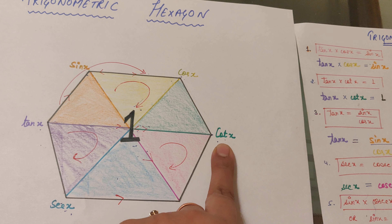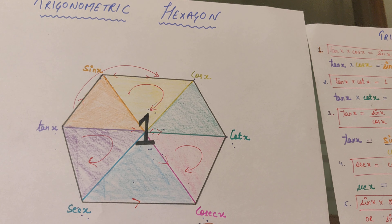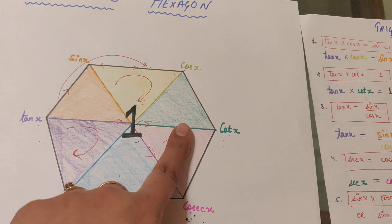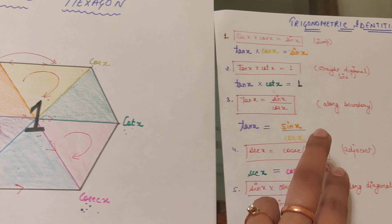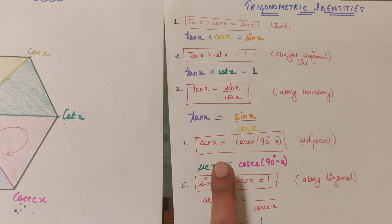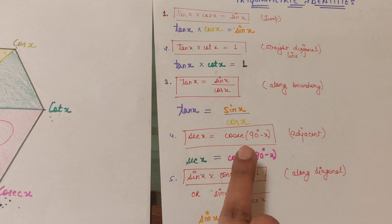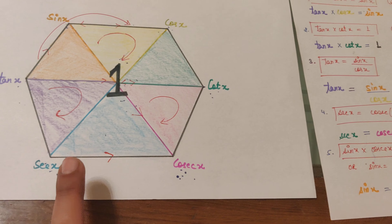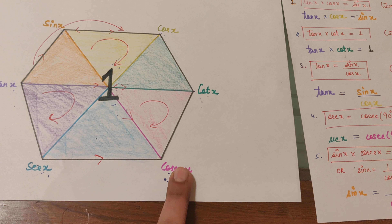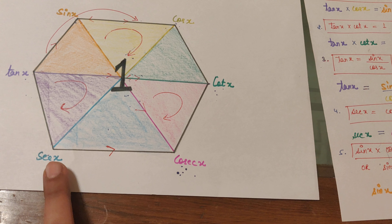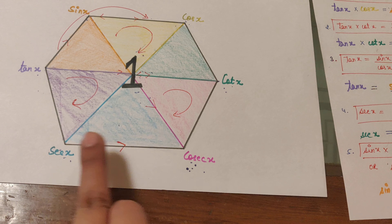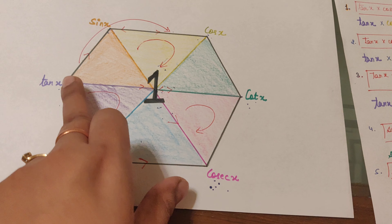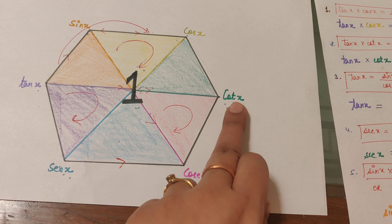The second identity: along the diagonal, tan x · cot x = 1. Jumping over the diagonal gives the middle value 1, so tan x · cot x = 1. Similarly, sin x · csc x = 1, and sec x · cos x = 1. These are the diagonal identities.